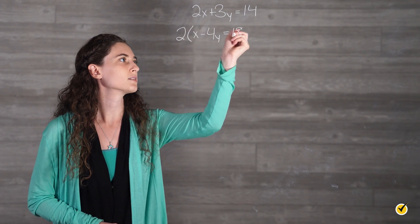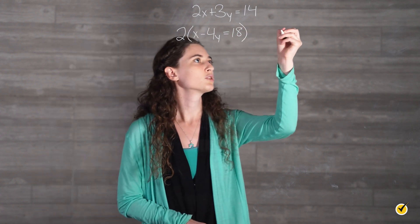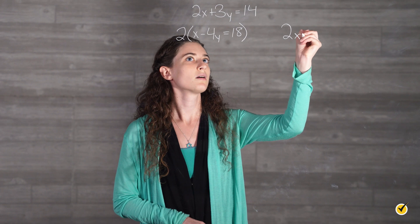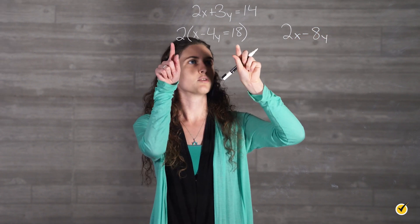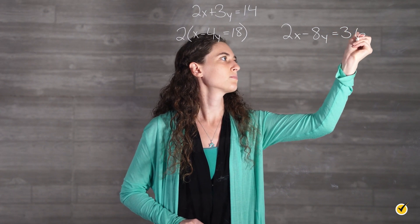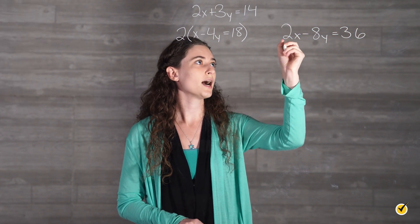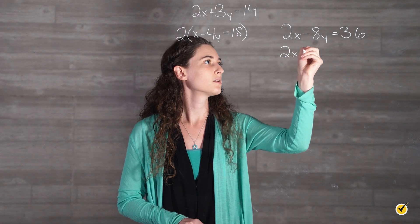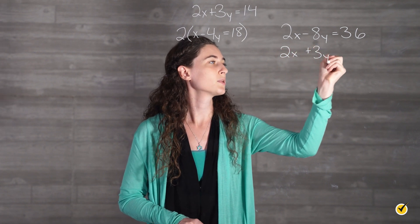So we are going to multiply this equation by 2 which will give us 2x minus 8y equals 2 times 18 is 36. And we are going to subtract 2x plus 3y equals 14.